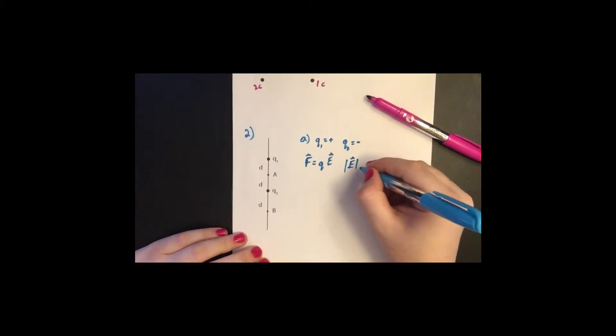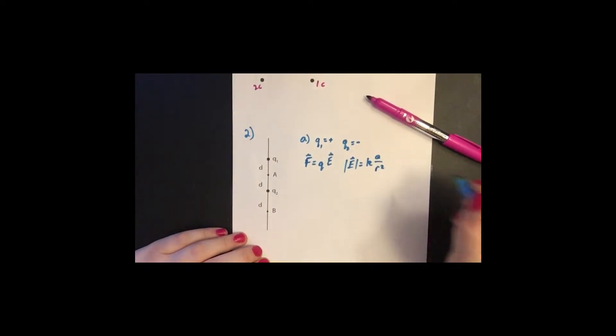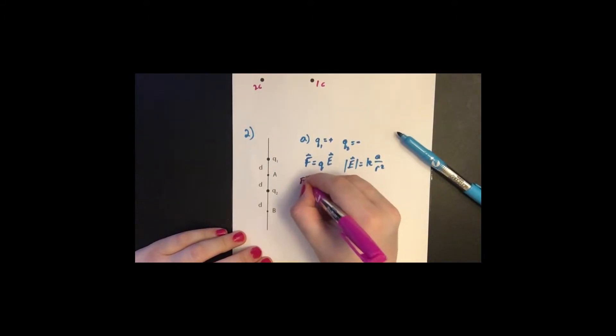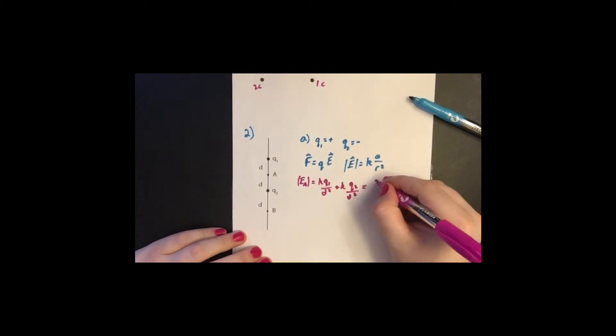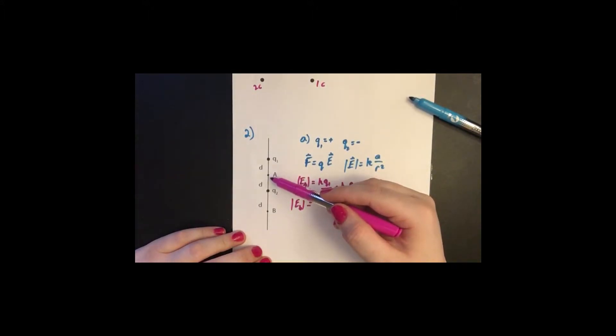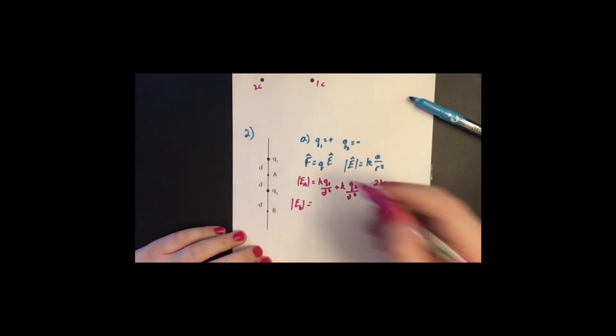So electric fields, if we just want the magnitude of an electric field, there's our constant K times our charge that we're looking at divided by the distance squared. So let's do point A first. So for point A, we have the magnitude of the electric field is KQ1 over D squared plus KQ2 over D squared. And that equals 2KQ over D squared. So we have Q1 and Q2 going to point A because their fields are pointing in the same direction. That's why they're both positive. The field going from Q2 points towards and the field going from Q1 points away. So they're going in the same direction.